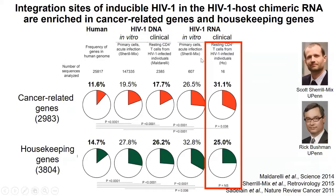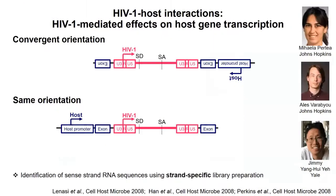We then wondered if there was a control. Looking at housekeeping genes — from a list of 3,000 housekeeping genes — we found that this trend is also true for housekeeping genes. So integration into cancer-related genes itself may not fully explain clonal expansion — this mostly reflects the nature of HIV integration into active transcription units, and there is something else beyond just this category of cancer-related genes.